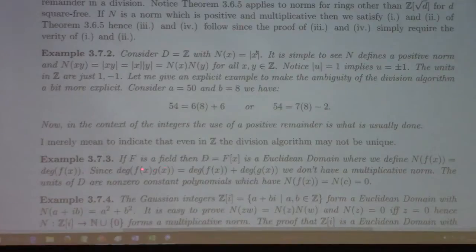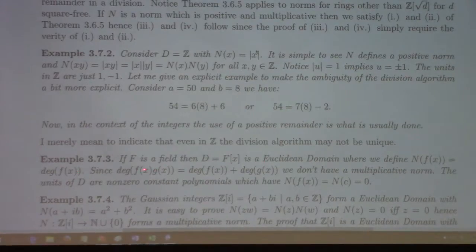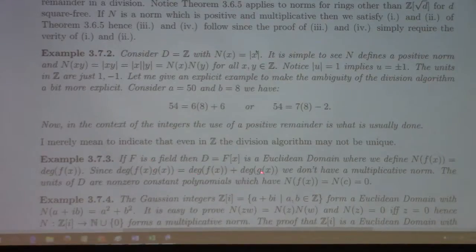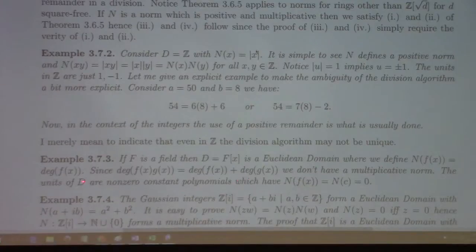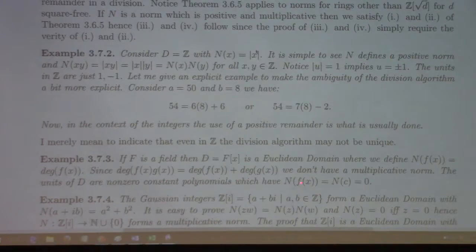For polynomial rings over a field, the degree function provides the norm. It's not multiplicative, though — the degree of a product is the sum of the degrees. The units of the polynomial ring are the non-zero constant polynomials, the degree-zero elements.